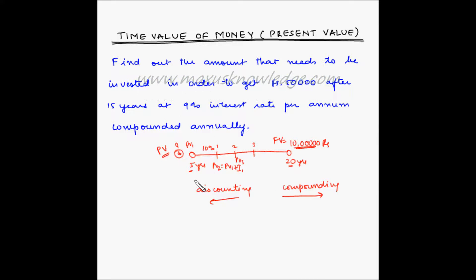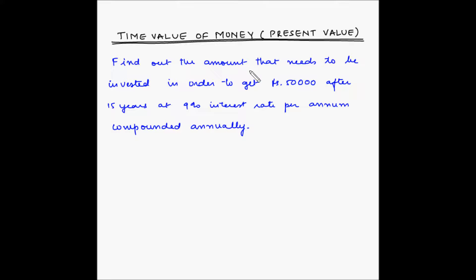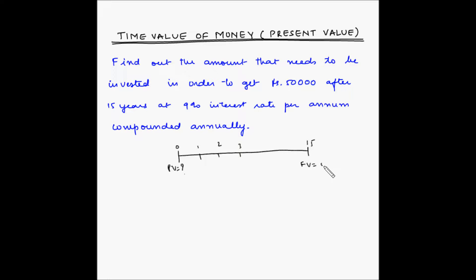Let's take the example at hand and figure out how to perform the calculations. We need to find the amount to be invested in order to get 50,000 rupees after 15 years at 9% interest rate per annum compounded annually. Drawing the time scale: at time 0, the present value is unknown; at time 15, the future value is 50,000 rupees. The tenure is 15 years and the interest rate is 9% per annum, compounded annually — meaning the amount is compounded at the end of every year.